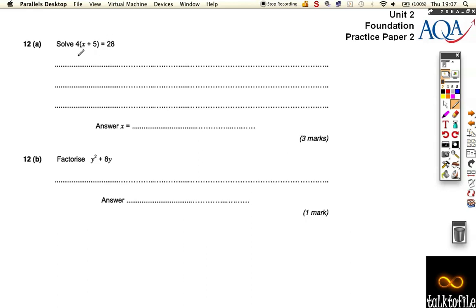Expanding that bracket, so we get 4 times x is 4x and 4 times 5 is 20, and we're saying that's equal to 28.